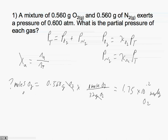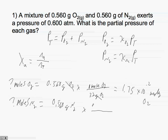We do the same thing for nitrogen. How many moles of N₂ is equal to 0.560 grams of N₂? We use our conversion, which tells us that for every one mole of N₂ we have 28 grams of nitrogen. This gives us 2.02 times 10 to the minus 2 moles of N₂.